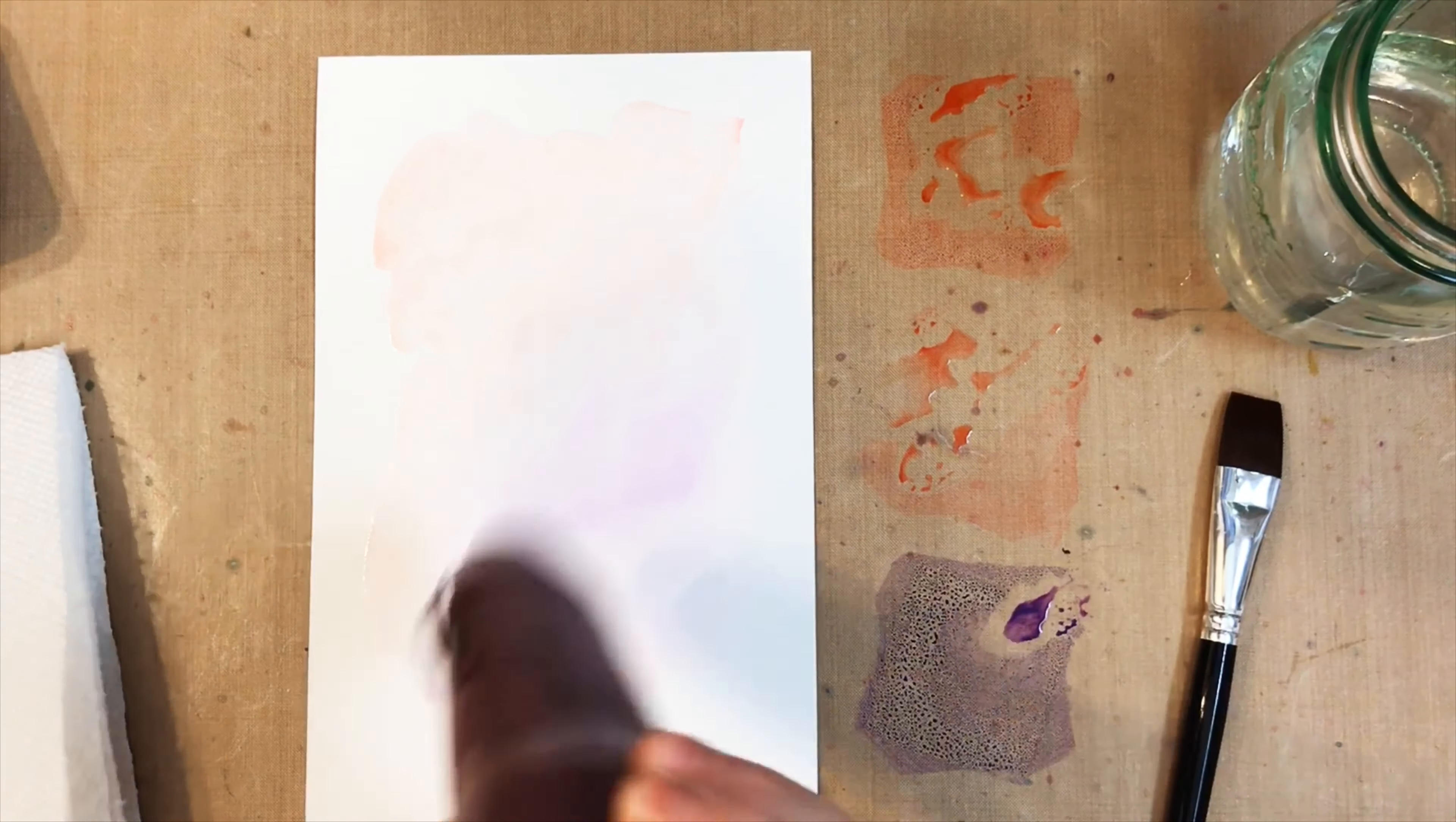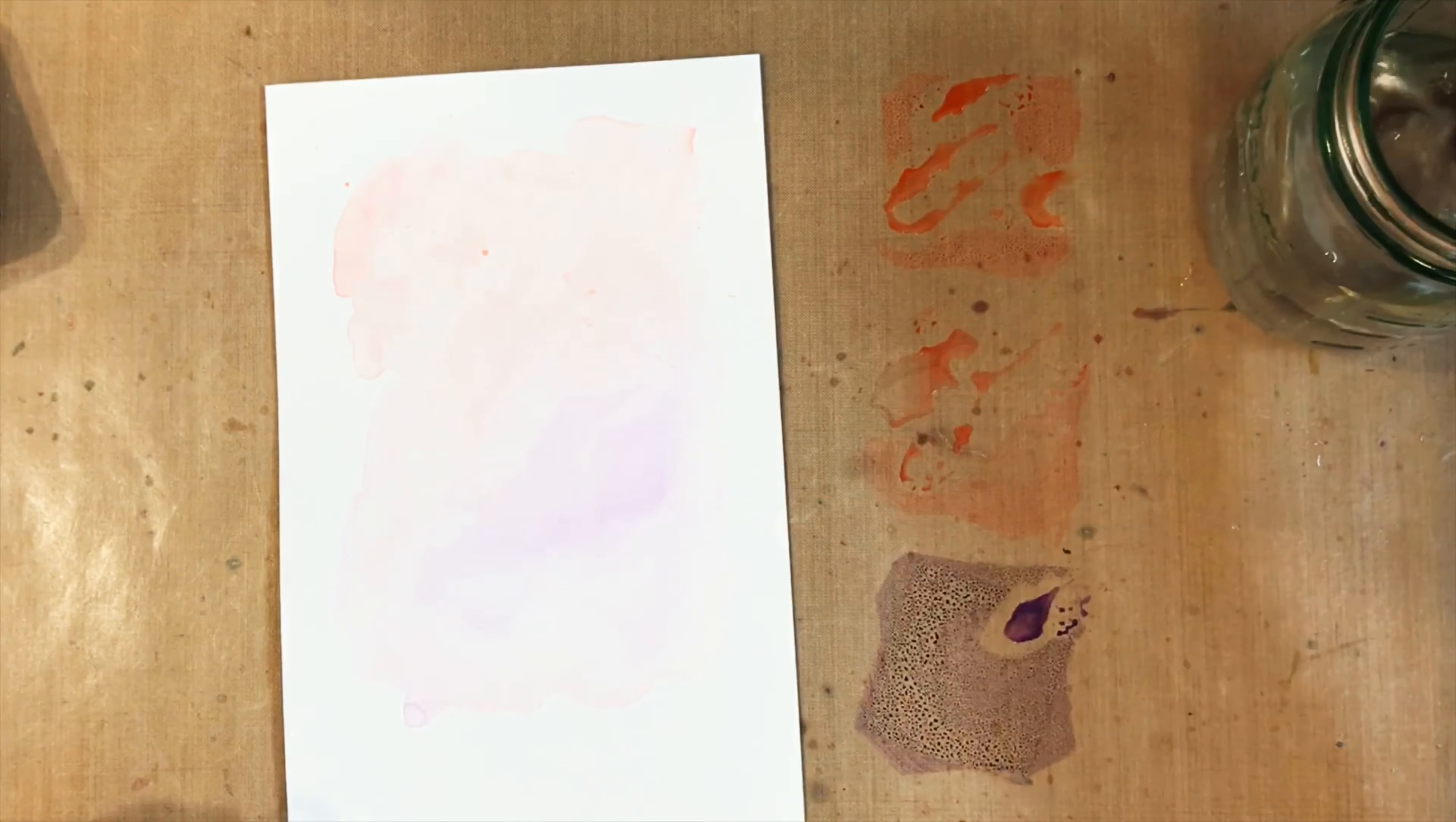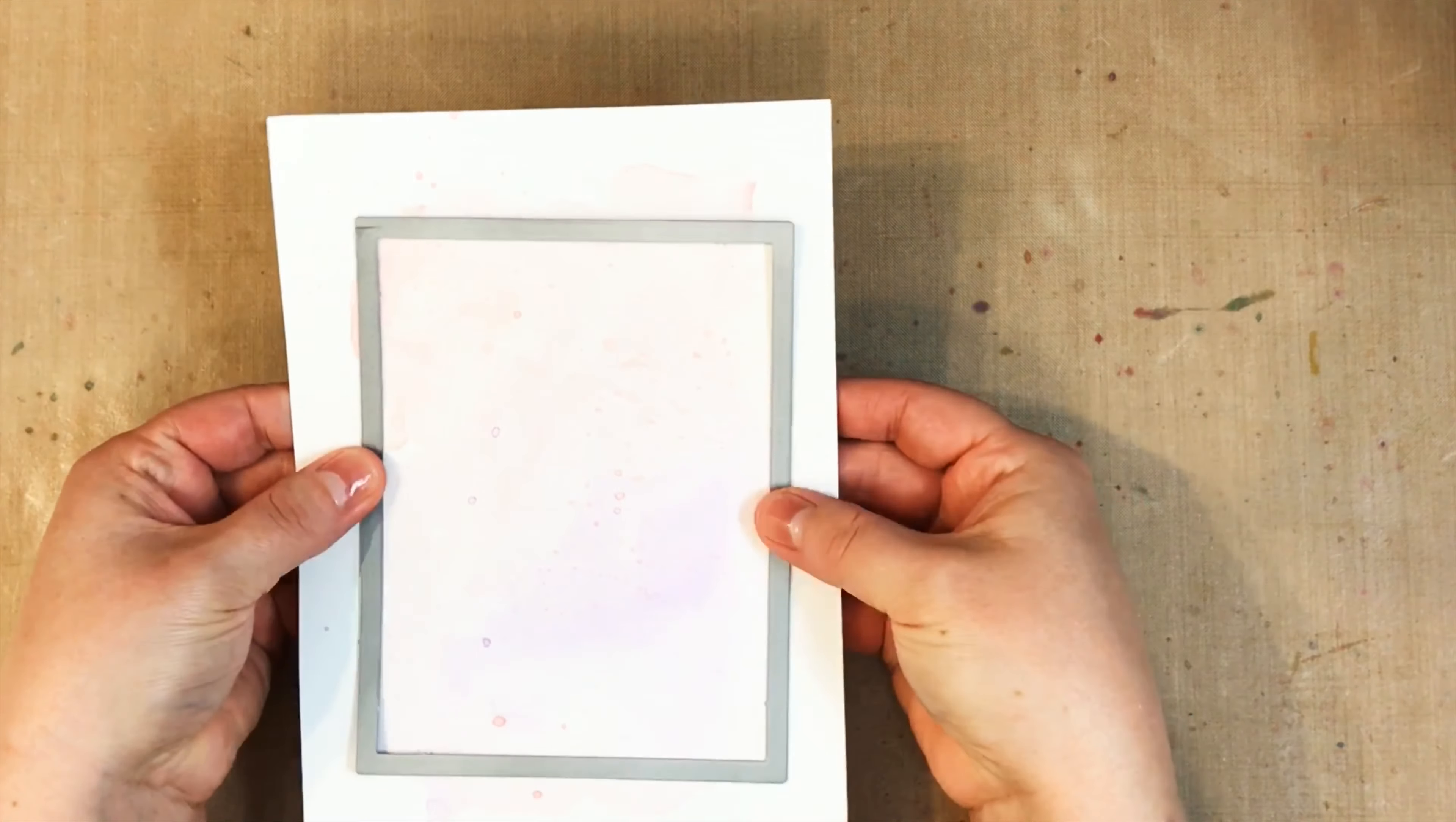Now I'm heat setting it because I'm impatient and it's going to warp a little bit because I don't have it taped down to a board, but I'm going to fix that later. After I've heat set, I'm adding a little splatter because I didn't want it to blend in, then I'm going to heat set again and run it through my die-cut machine with a stitched rectangle die, and that's going to help with that warping.